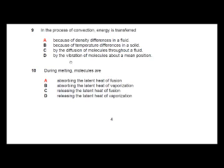For question number 9, in the process of convection, energy is transferred because of density differences in a liquid. This one you have to remember - convection current is always linked to density differences. The rest of the options are wrong. And for question number 10, during melting molecules are absorbing the latent heat of fusion - this one you have not done, so you don't have to attempt this question.